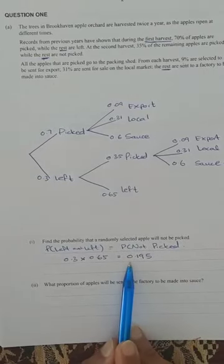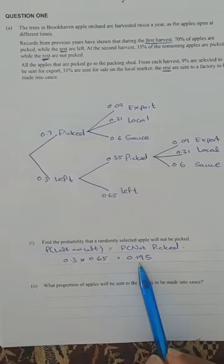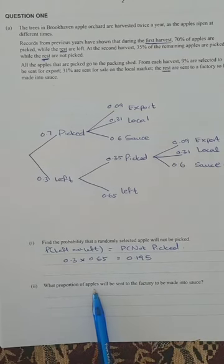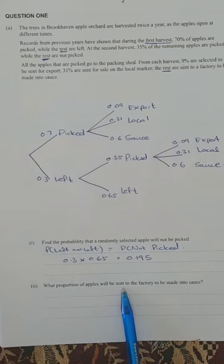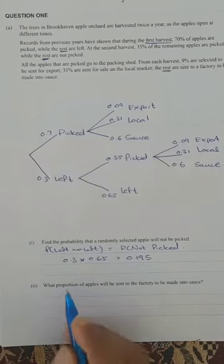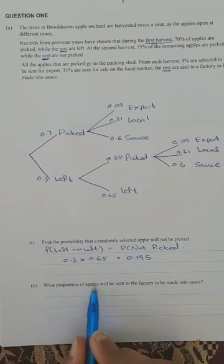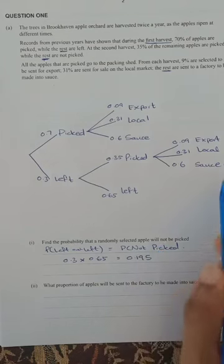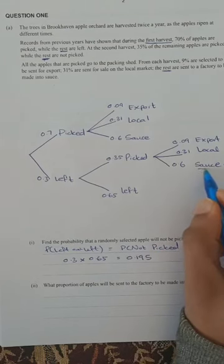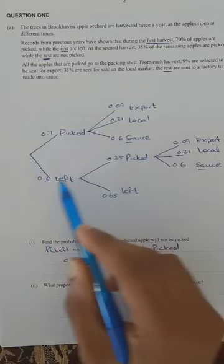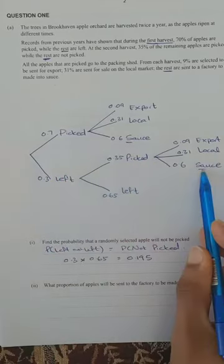If the probability of getting picked is ever asked, take one minus 0.195. The next question asks what proportion of apples will be sent to the factory to be made into sauce. To get to sauce we have two trails: picked then sauce, or left then picked then sauce.